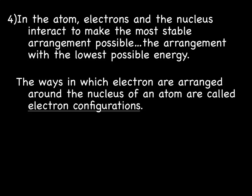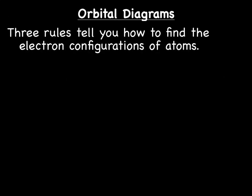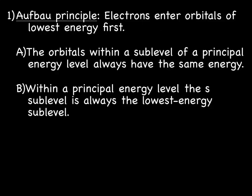The ways in which electrons are arranged around the nucleus of an atom are called electron configurations. And that's what we're going to learn how to do today. Orbital diagrams, which are related to electron configurations, are normally the first step of writing electron configurations. There are three rules to tell you how to find the electron configurations of atoms. And just so you know, you need to know the name of the rule, what the rule says, as well as how to apply the rule.